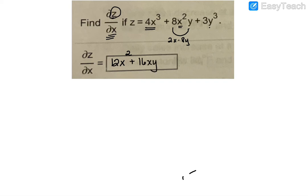And then on the last term, since there's not an x present, you derive it just like you would a constant, and the derivative of a constant is just 0. So my final derivative of z with respect to x would be the 12x² plus 16xy.